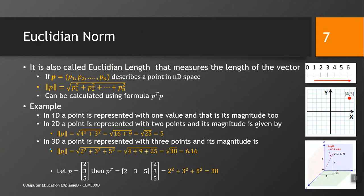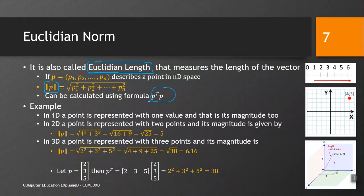The Euclidean norm, also called Euclidean length, measures the length of a vector. The Euclidean formula for n dimensions is given as the square root of p1² + p2² + ... + pn². We can express this with the short notation of the square root of pᵀp. As an exercise, write p, take its transpose, multiply it with p, and see the result. In one dimension, a point is represented with one value, which is also its magnitude — for example, a vector from 0 to 4 has magnitude 4.